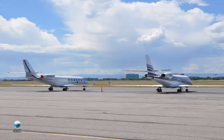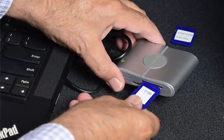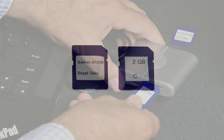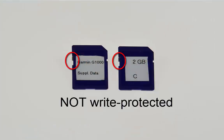Now you're ready to program your databases. First, insert either the Supplemental or Nav Data Card into the SD card reader, depending on which service you'll be updating. In this example, we'll program the Nav Data first. Make sure the card is not write-protected.